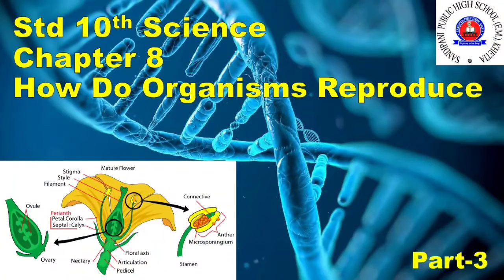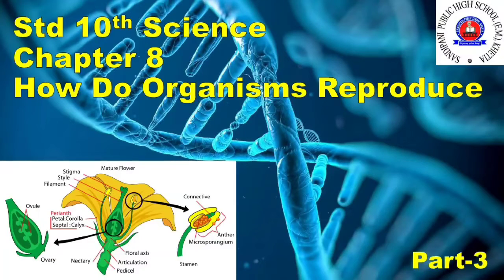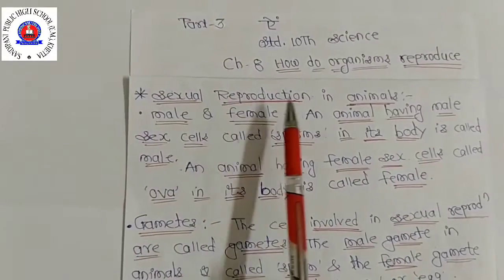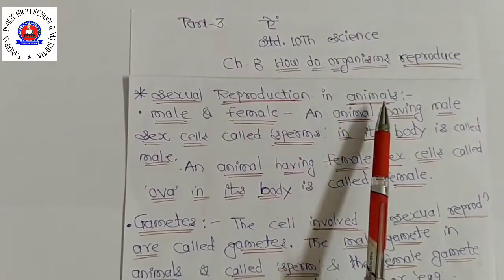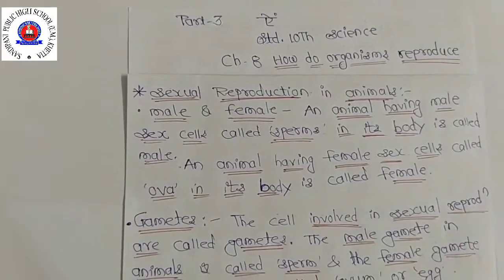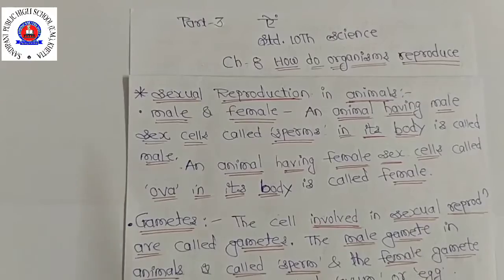Welcome students. In this third session from chapter 8, 'How Do Organisms Reproduce,' we will continue. In the last session we studied about asexual reproduction and sexual reproduction in flowering plants. Today we are going to discuss sexual reproduction in animals.